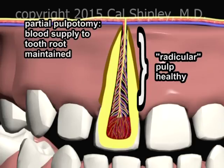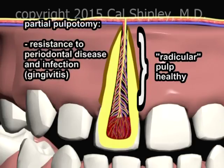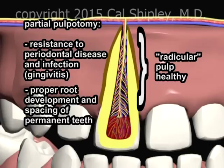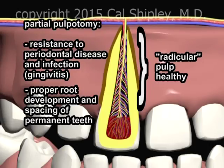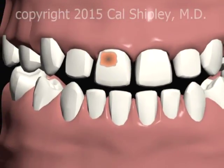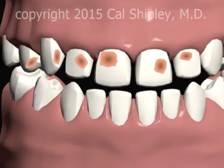This provides important protections for primary or immature permanent teeth in children, including resistance to early onset periodontal disease or infection, also known as gingivitis, and when performed on primary teeth, proper root development and spacing of permanent teeth. Particularly in children who have multiple cavities affecting the pulp chamber, use of the partial pulpotomy procedure can have a profound effect on future dental development and health.